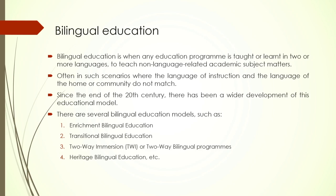Let us move on to bilingual education. Bilingual education has been around for some time but now it is more common and found in many countries owing to a number of large migrations across countries, making it a necessity. Bilingual education is when any education program is taught or learned in two or more languages — to teach non-language-related academic subject matters. For example, if there is a school that teaches subjects in both English and Hindi, with some classes in English and some in Hindi on the same subject — geography taught through English and through Hindi — that is called a bilingual education system.